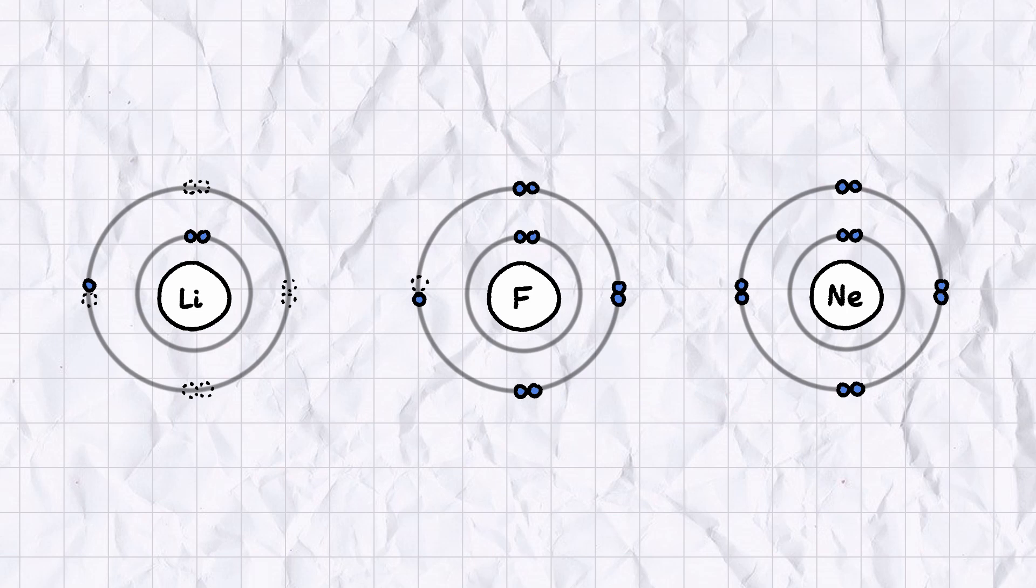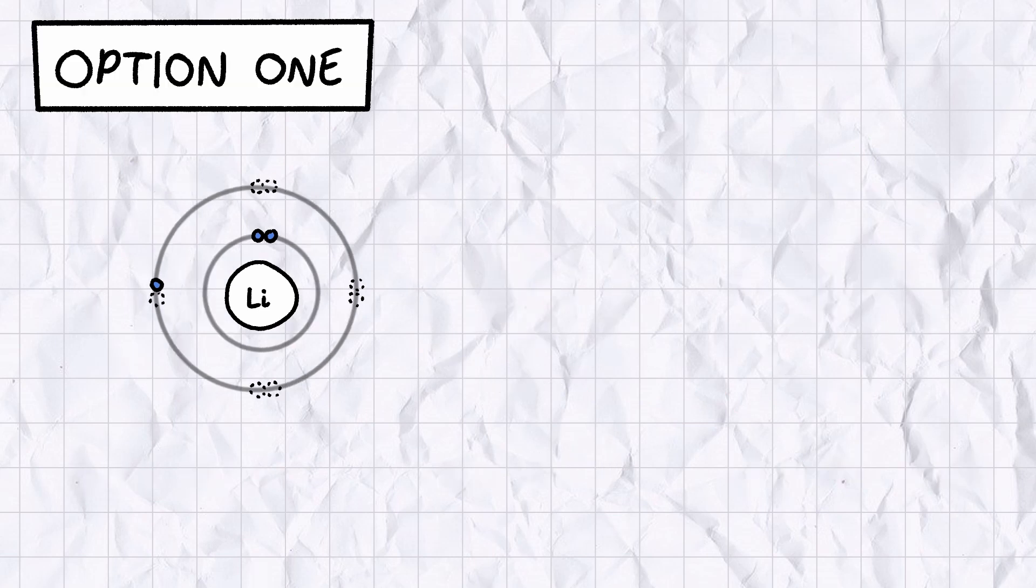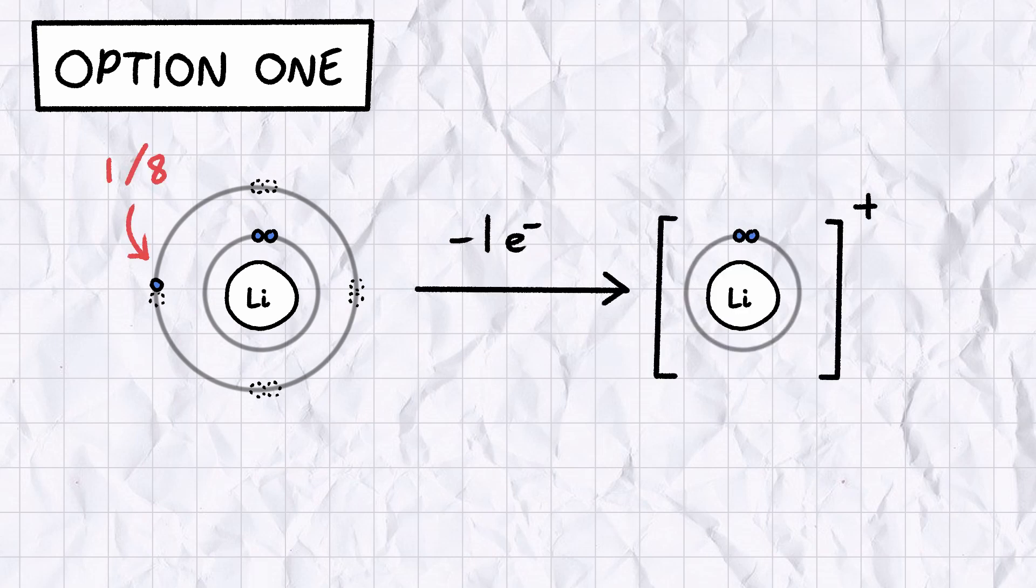All atoms want to have neat complete shells of electrons, and there are three main ways to get them. Option one: atoms like lithium with only a handful of outermost electrons can donate them to other atoms so the completed shell underneath becomes the new top shell, a chemical process called oxidation.